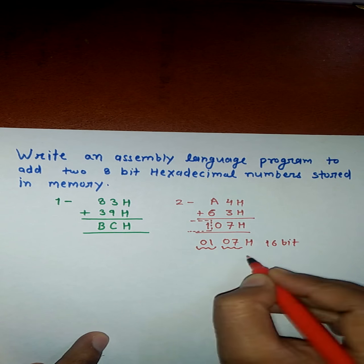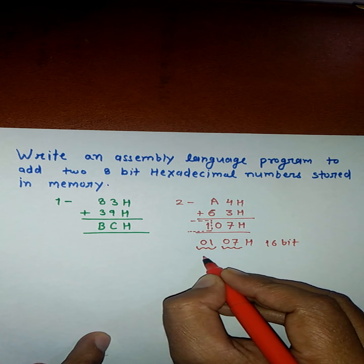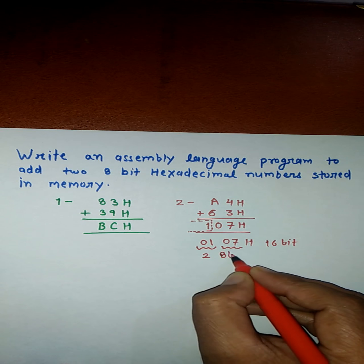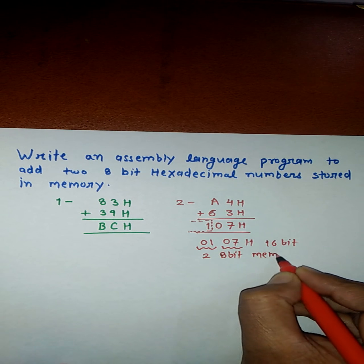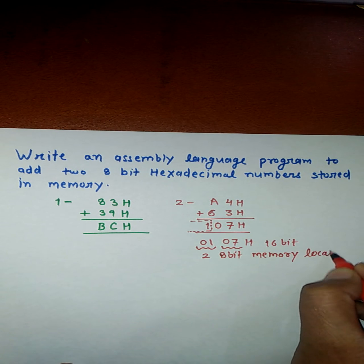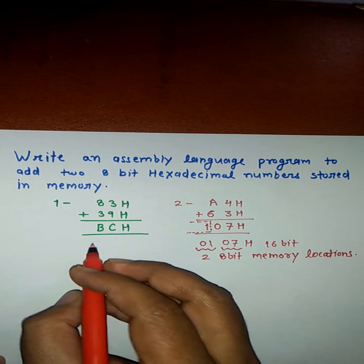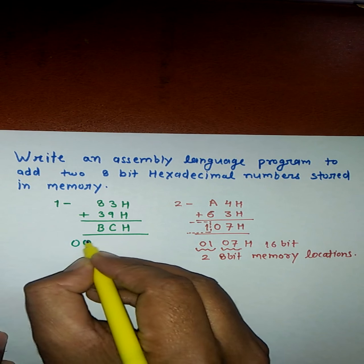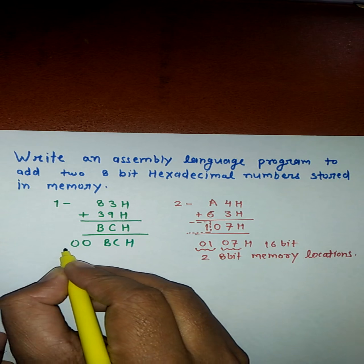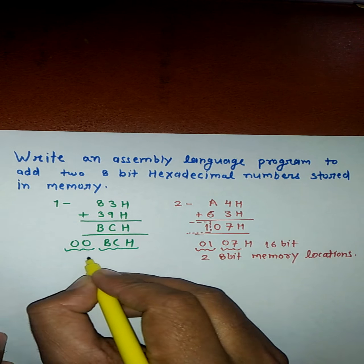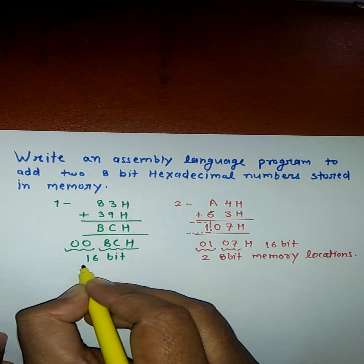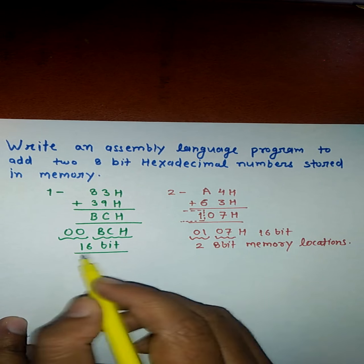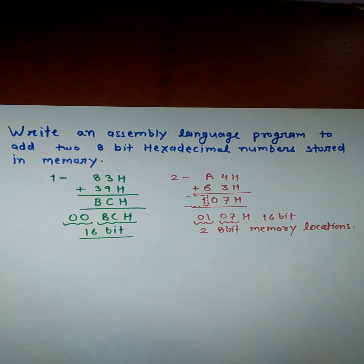To store a 16-bit output, you will need two 8-bit registers or two 8-bit memory locations. If no carry is generated, the answer may be written as 00BCH — we still use 16 bits. Because we are writing a program where carry may or may not be generated, we have to take care of both these cases.